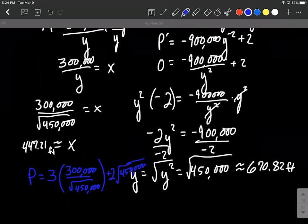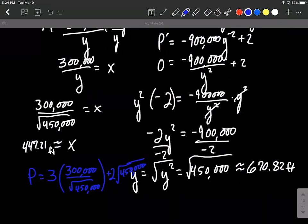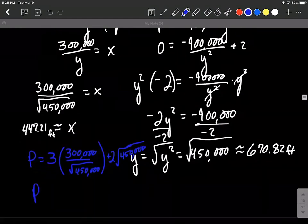And we could get our calculators out and get an approximation for this if we actually need to go shopping. So 900,000 divided by the square root of 450,000 plus 2 times the square root of 450,000. I got the total amount of fencing here is going to be approximately 2,683.28 feet.